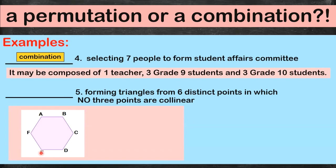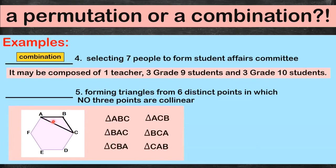Now we form triangles. Take triangle ABC — you can also call it triangle ACB, triangle BAC, or triangle BCA. No matter how you arrange the letters, they all refer to the same triangle. The arrangement does not matter, so this is a combination problem.